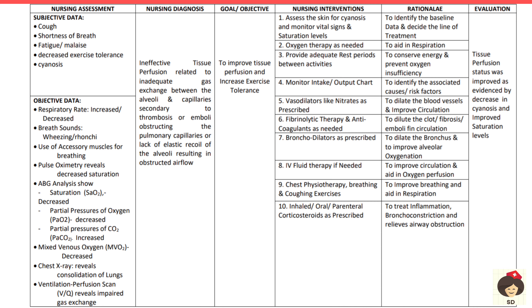Chest X-ray shows lung consolidation indicating obstruction or bronchial dilation. Ventilation-perfusion scan reveals impaired gas exchange and pulmonary capillary obstruction. The goal is to improve tissue perfusion and increase exercise tolerance. Interventions: assess skin for cyanosis, monitor vitals and saturation to establish baseline. Oxygen therapy aids respiration between activities. Maintain intake-output chart to identify associated causes — such as bleeding. Vasodilators like nitrates promote vasodilation and increase blood flow.